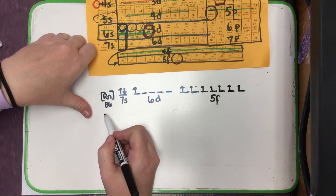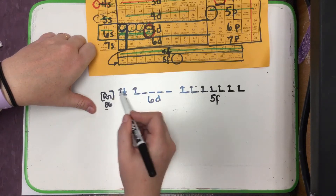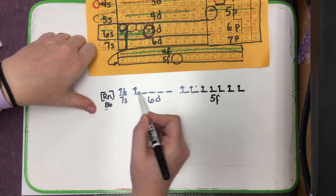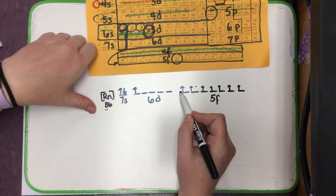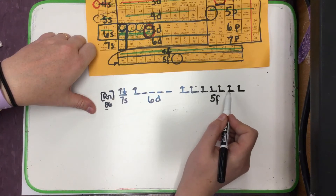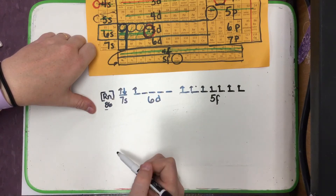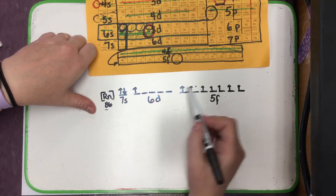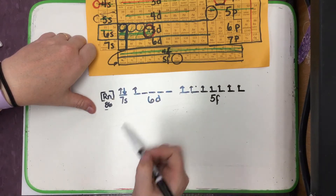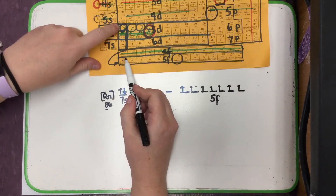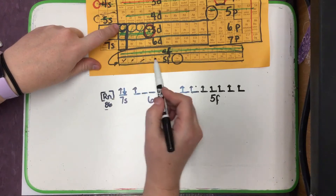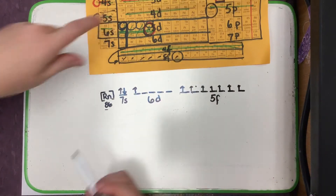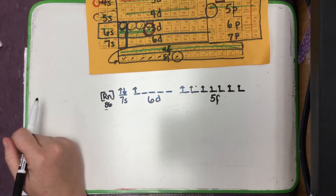We can add up all our electrons to verify we have it right: 86 from radon, plus 87, 88, 89, 90, 91, 92, 93, 94, 95, 96 — that checks out. We can also look at the room we're currently filling and count 7 electrons in the 5F subshell.